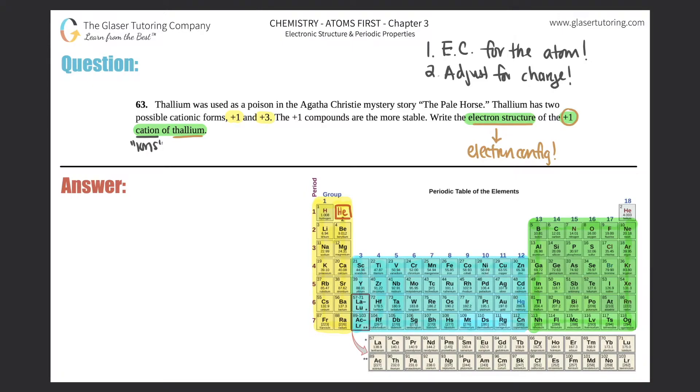Right now I'm going to put Tl (that's thallium) +1, but I'm going to write it as if there was no charge. First things first, thallium is number 81 on the periodic table. It's all the way down there, so we got a long way to go for writing this electronic structure.